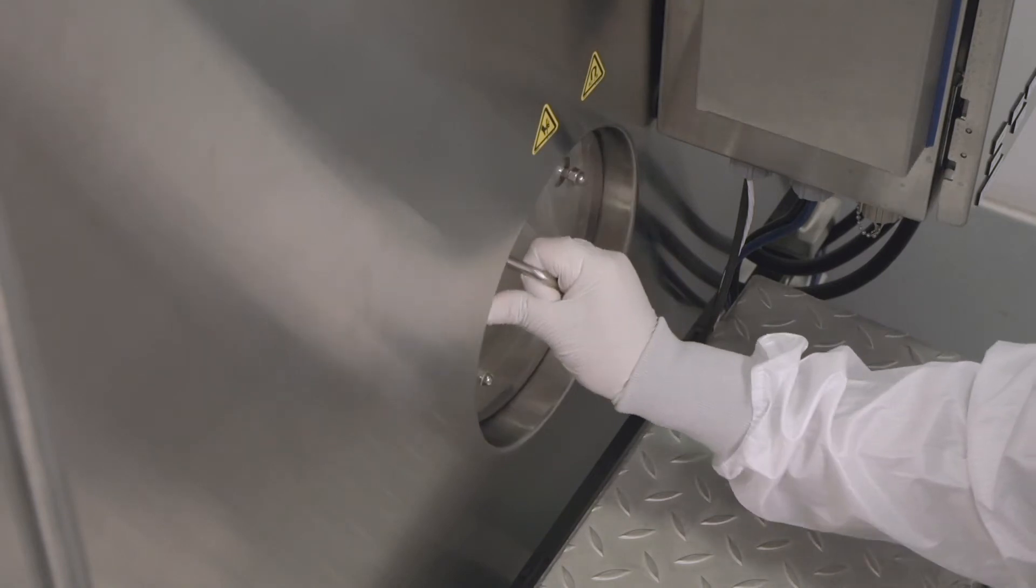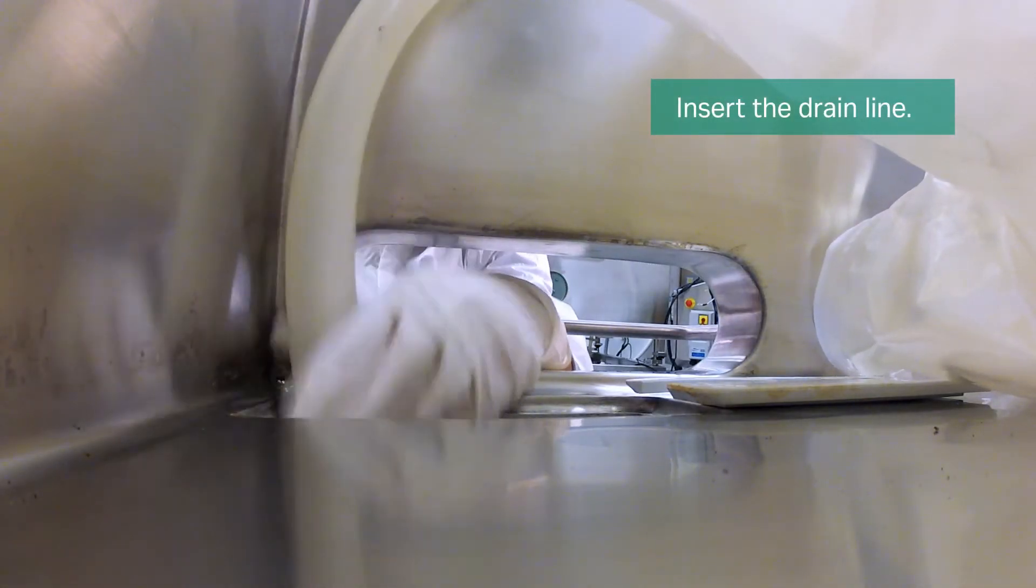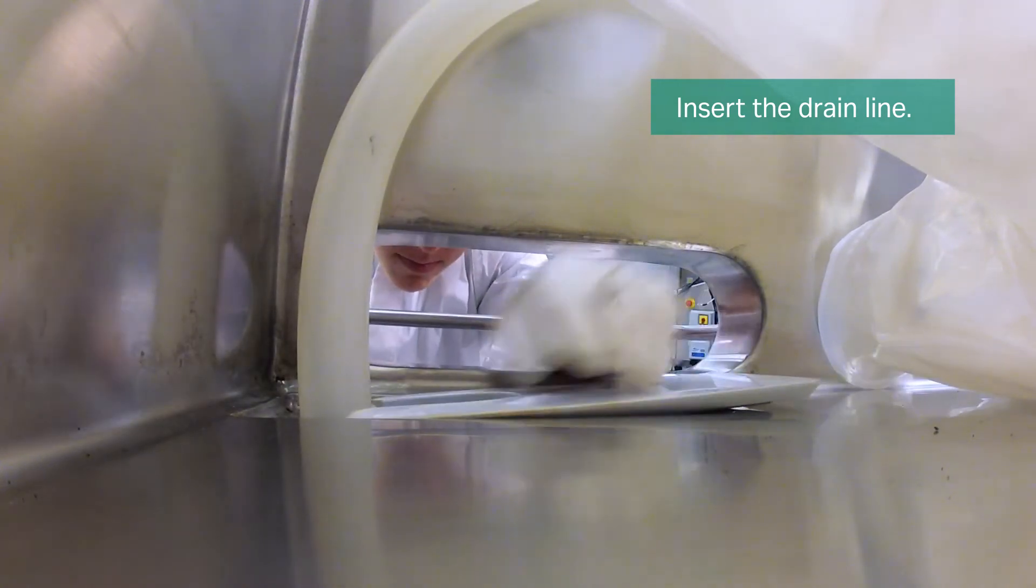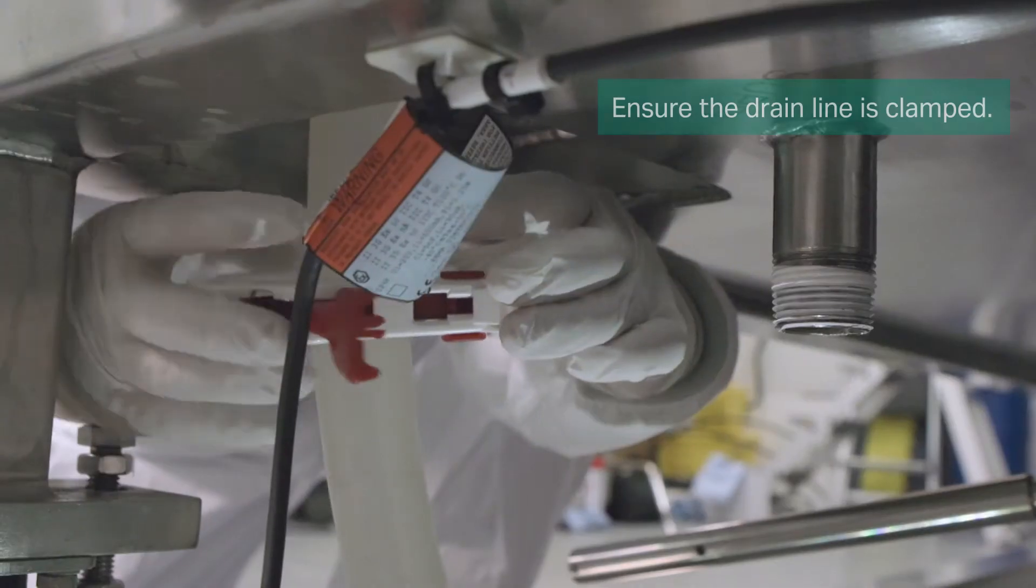Reinstall the access doors. Insert the drain line by carefully pulling the line through the drain opening and ensure the line is clamped.